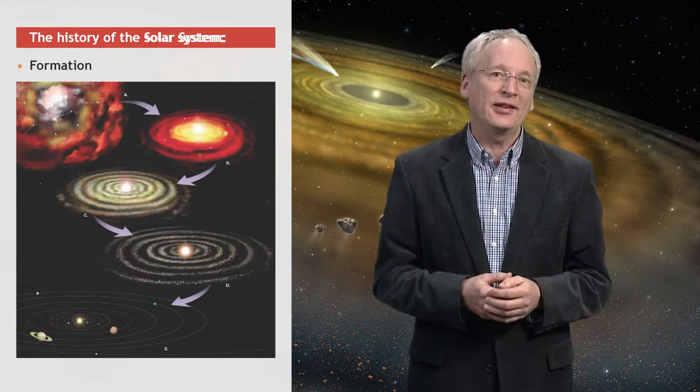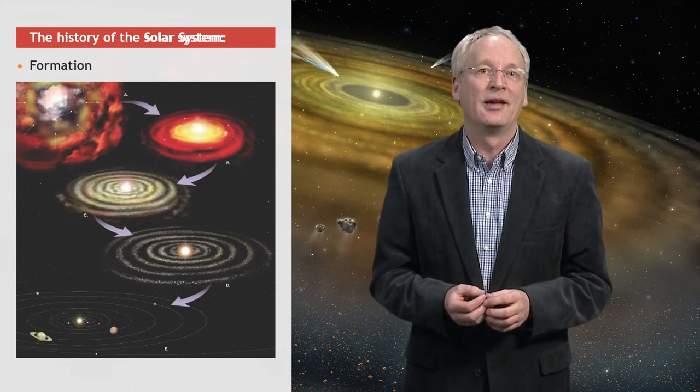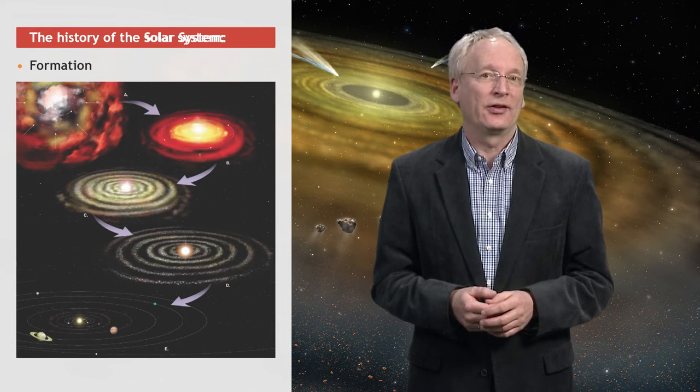In this disk, small dust particles started to stick together and to grow all the way to the Earth-like planets and the giant planets that we are seeing now.